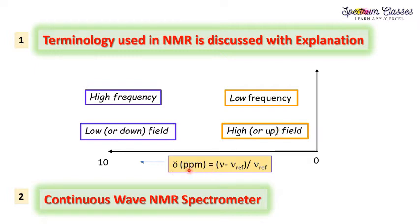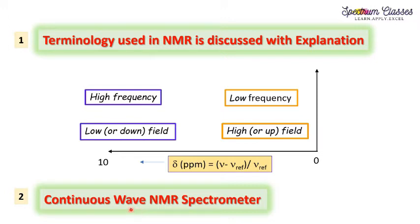This scale is represented in chemical shift value, which is represented by delta (δ). This is a unitless quantity determined in ppm and it is in frequency terms. To understand these terminologies — in frequency and field terms — it is very important to know about the early-stage NMR spectrometers, that is, the continuous wave NMR spectrometer.